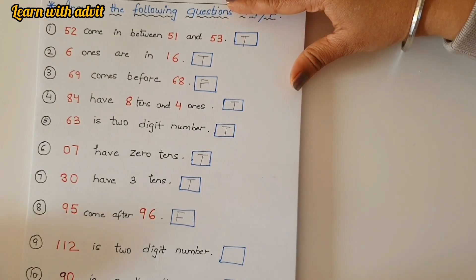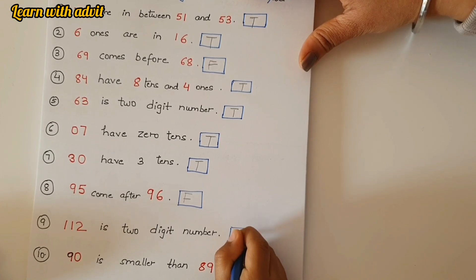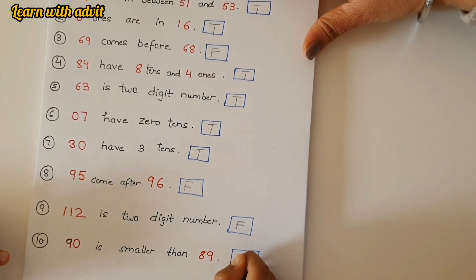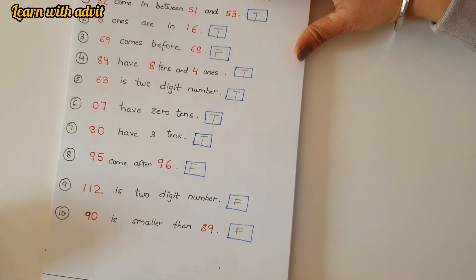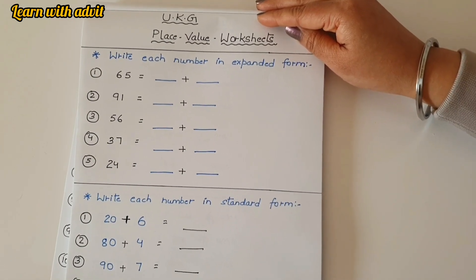112 is two digit number. No, it's a three digit number. Yeah. 90 is smaller than 89. No, it's a big number than 89. Very good.